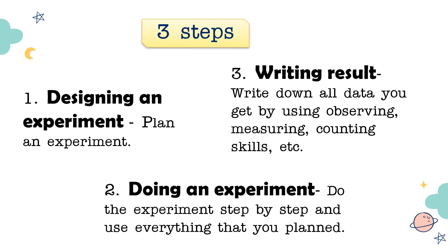There are three steps. Number one: designing an experiment — plan an experiment. Number two: doing an experiment — do the experiment step by step and use everything that you planned. Number three: writing results — write down all the data you get by using observing, measuring, and counting skills, etc. That is the three steps.